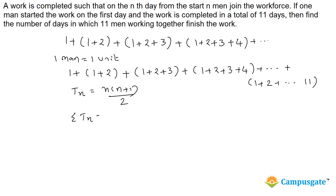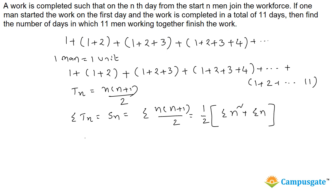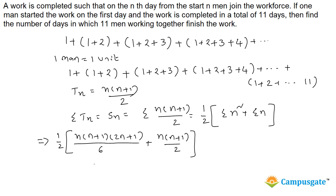We need to find sigma T_n, which gives us S_n — the total sum. So we apply sigma of n(n+1)/2. Bringing 1/2 to the front, we get sigma n² plus sigma n. The formula for sigma n² is n(n+1)(2n+1)/3, and sigma n is n(n+1)/2. Taking n(n+1)/2 as a common factor from both terms, we get n(n+1)/2 times [(2n+1)/3 + 1].